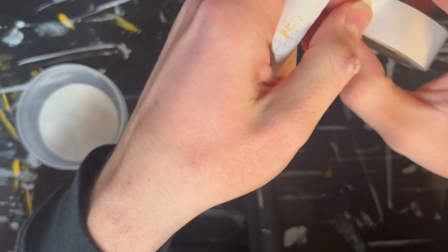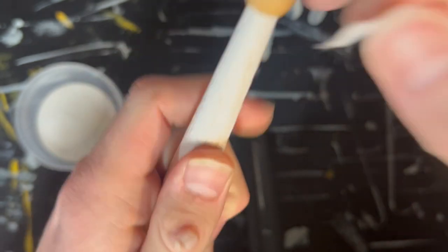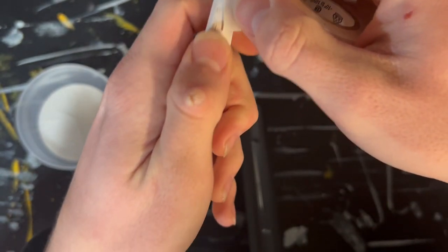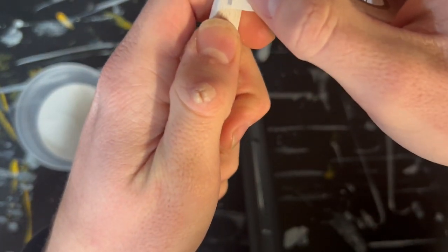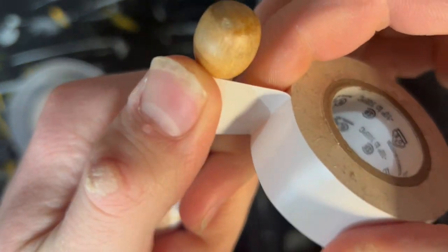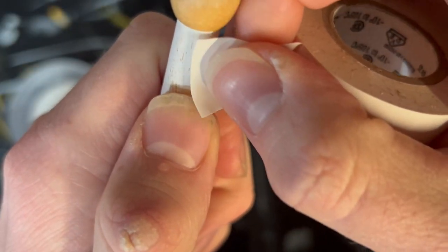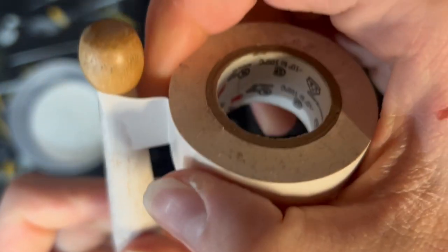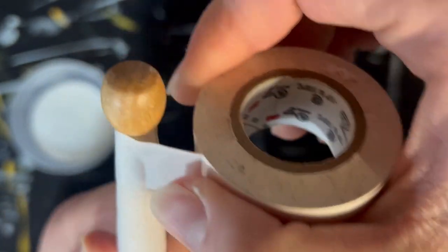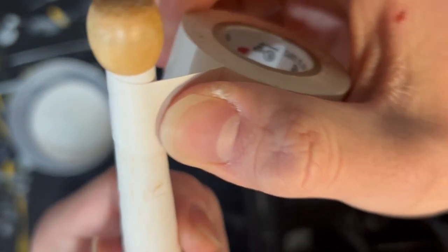What's up, today we're going to be learning how to tape your sticks. You want to start the tape at the top here, right underneath the bead of the stick. Go around one whole time, give or take, and then you're going to start slanting down.